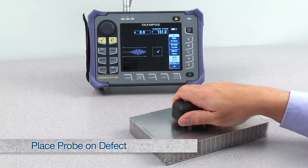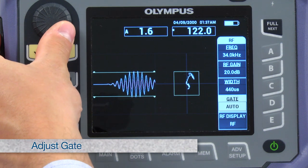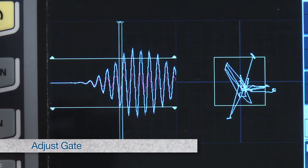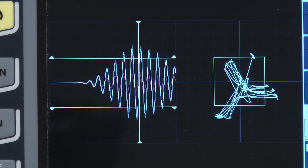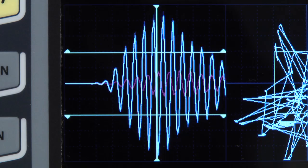Move the probe over the defect and hold it there. Using the knob, adjust the gate. Locate the position where the disbond signal amplitude differs the most from the reference signal. This is normally at the signal peak.